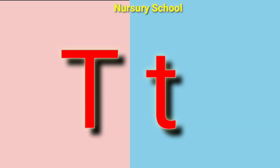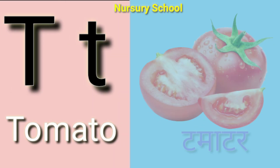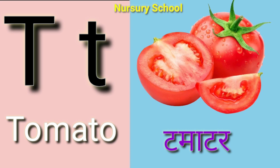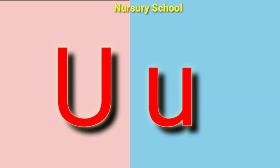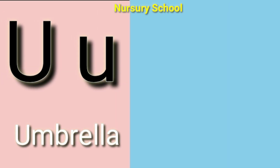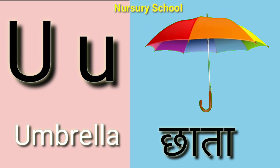T for tomato, tomato means tomato. U for umbrella, umbrella means chata.